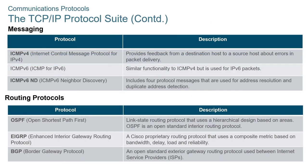We still have messaging protocols like ICMP, or ping — ping is an ICMP echo request message. We have routing protocols: OSPF, EIGRP, RIP, BGP, and so forth. Routing protocols are the protocols used for how routers will share information between one another.